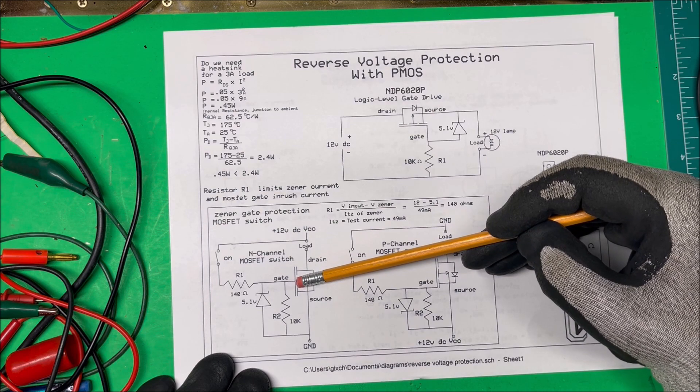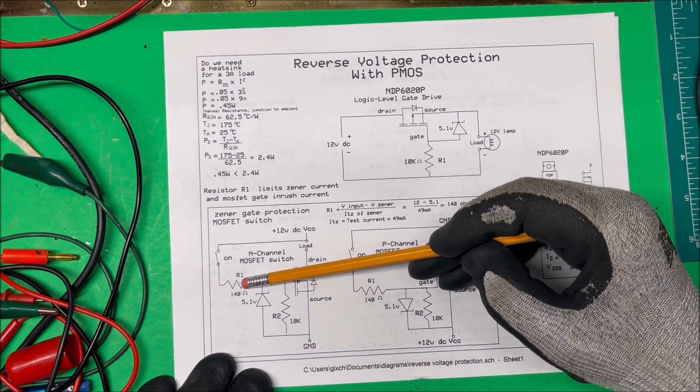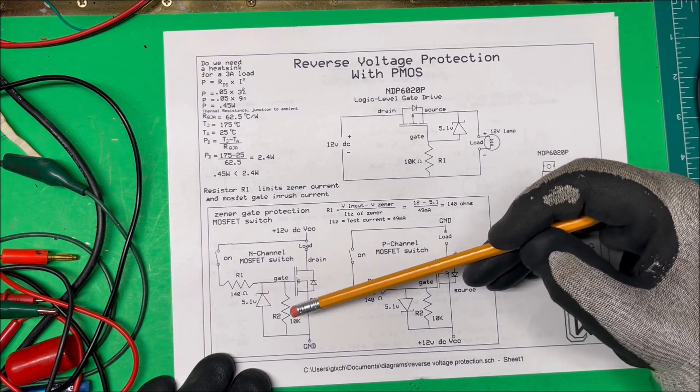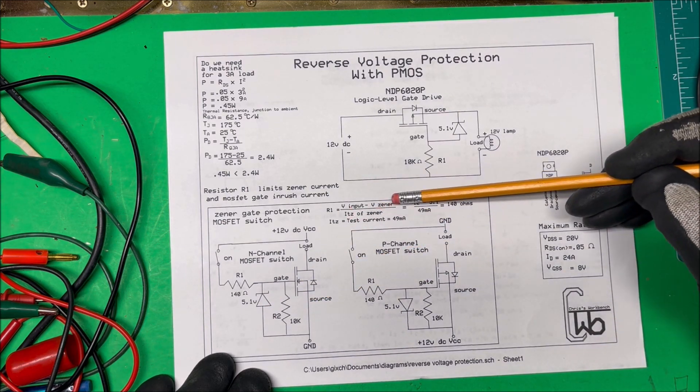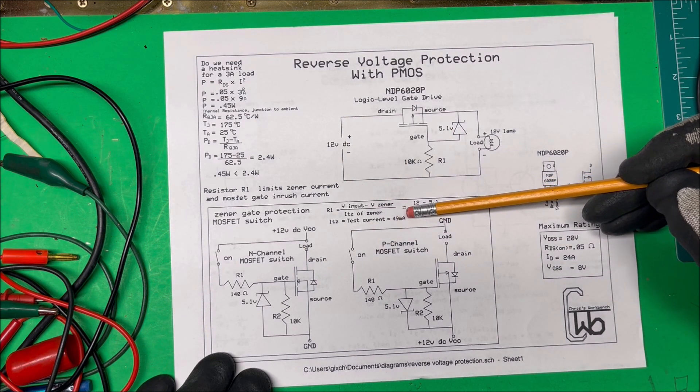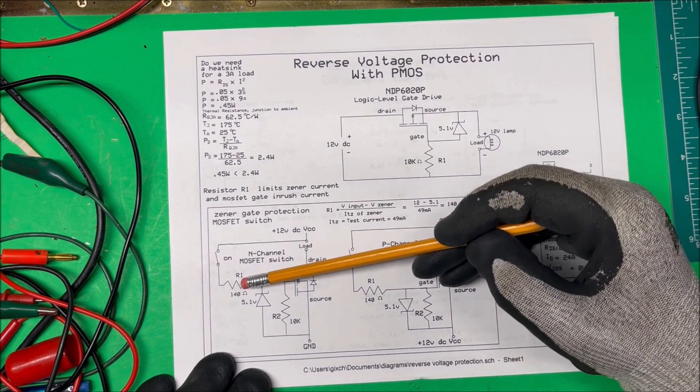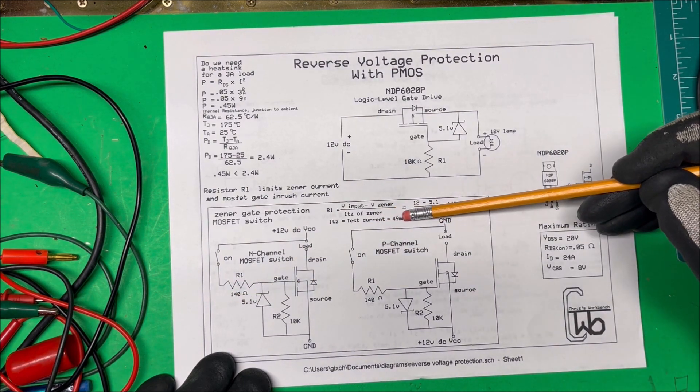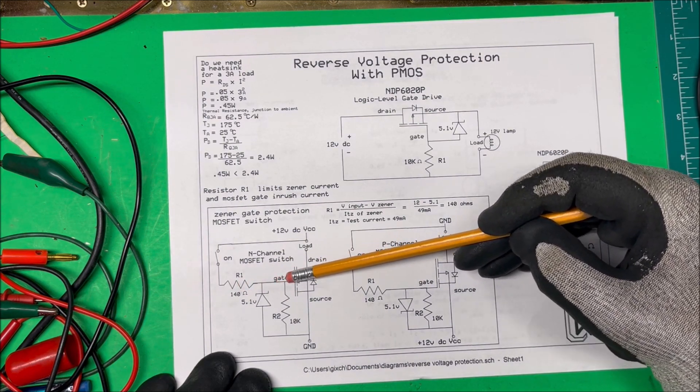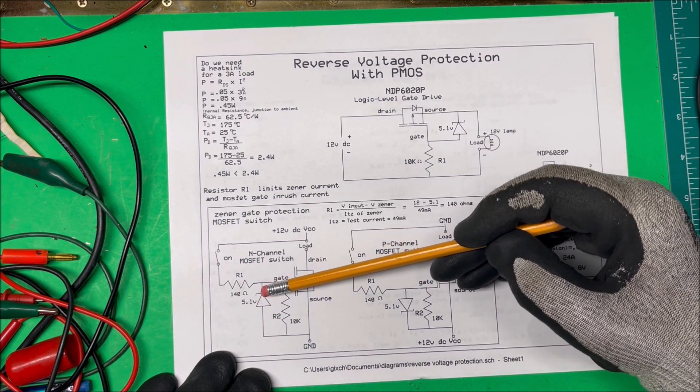The MOSFET will turn off. Now this resistor here is just to keep the current down on the zener. Here's a formula I use for that: the ITZ, the test current for this particular one, is 49 milliamps. That's why you'd pick 140 ohms, but that's kind of the max you can have, so I would go with a 1k up here. There's no load on this thing, so we don't have to worry about regulating.